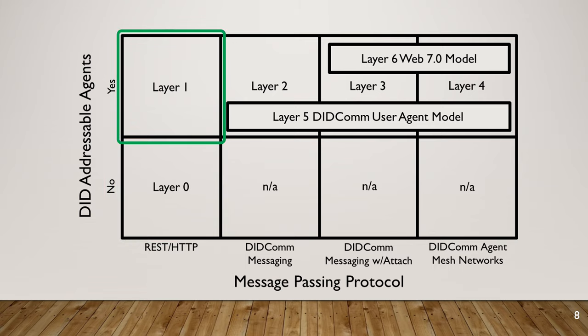From layer zero, we add DID addressability. We're still using REST over HTTP agents, but we're using DIDs to address and name those agents. This is where we introduce the DID registry, because to send a REST over HTTP message from one agent to another, you need to take the receiver's DID and look up their service endpoint. This is just addressability — no authenticated encryption yet.